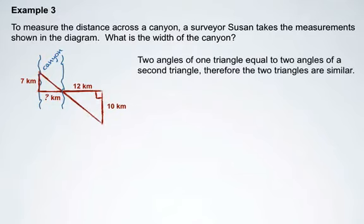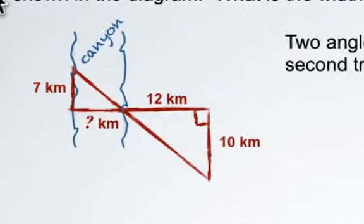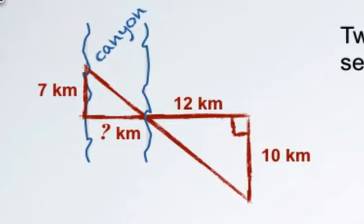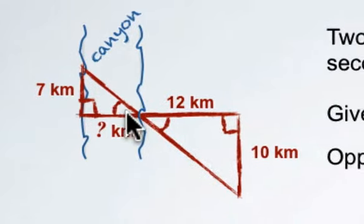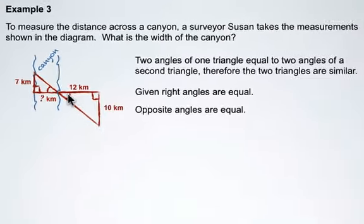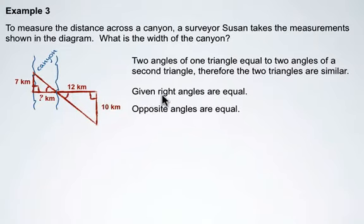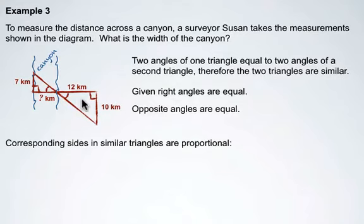What you may have noticed is that we've set up two triangles here given her measurements. Two angles of one triangle equal two angles of a second triangle because we have two right angles here and two opposite angles from each other. So given that the right angles are equal and the opposite angles are equal, we can say that these two triangles formed are similar triangles.